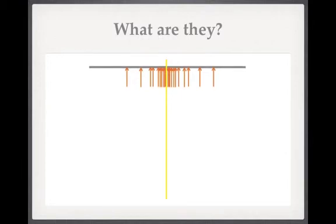Now under each of these sample means I'm going to draw a line or an interval which extends from two standard errors to the left of it to two standard errors to the right of it. So here's the first one — that double-headed arrow is just a line or a range of numbers where the left arrowhead is two standard errors to the left of that value and the right arrowhead is two standard errors to the right of the value. And we could draw that under each of these samples.